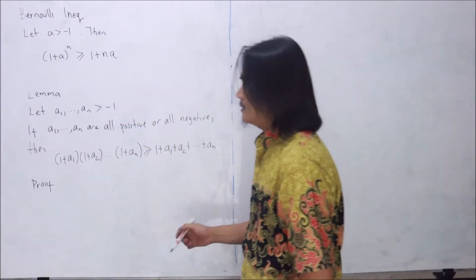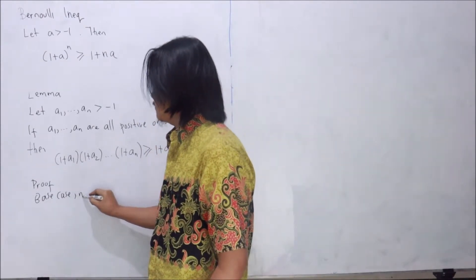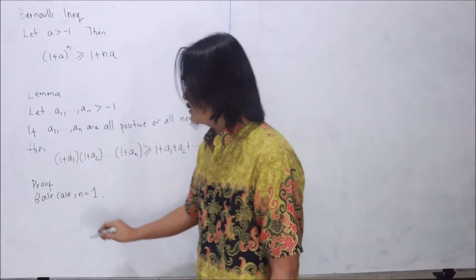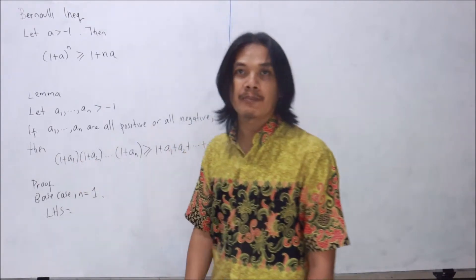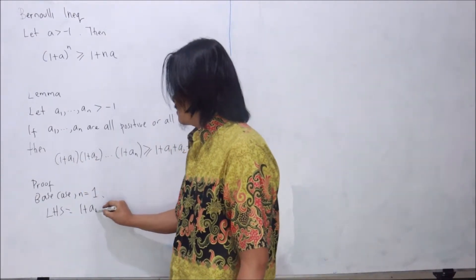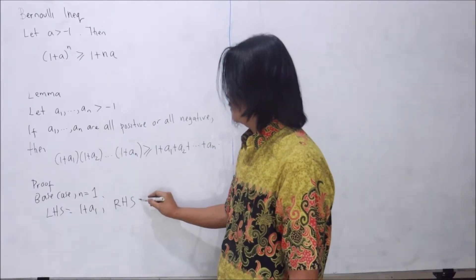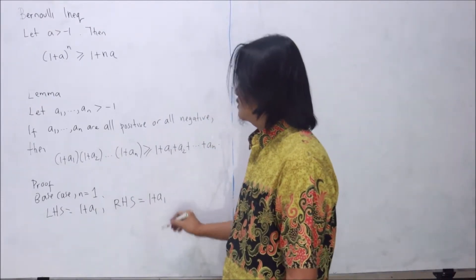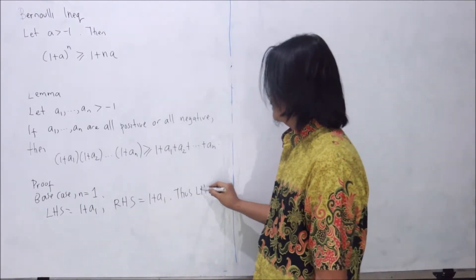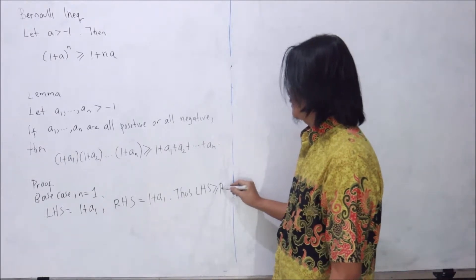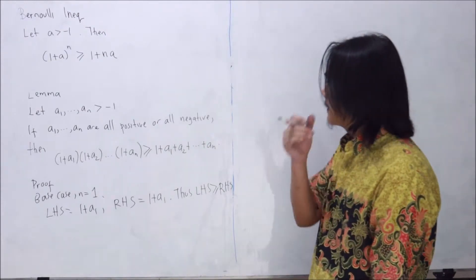For the base case, which is n equals 1, the left-hand side is equal to 1 plus a1, and the right-hand side is also 1 plus a1. Clearly, the left-hand side is greater or equal to the right-hand side — in fact, they are equal.